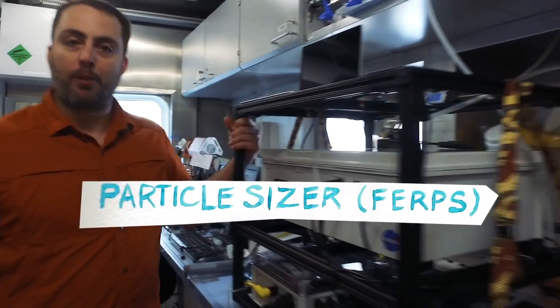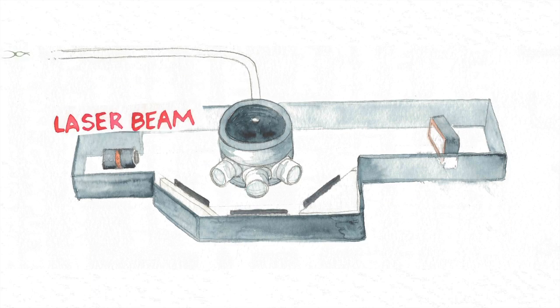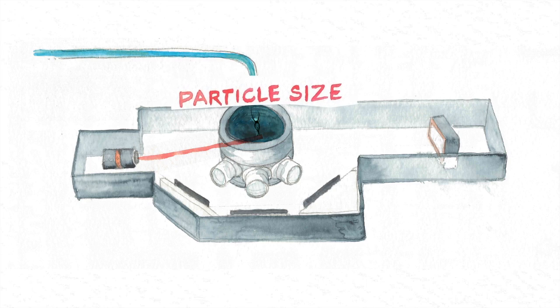Understanding whether particles near the surface of the ocean are big or small has implications in the carbon cycle, so I've brought a prototype instrument that measures particle size as we pump seawater through it. Inside the instrument, a laser beam passes through the seawater sample that we're pumping, and all the particles suspended in the beam scatter light in different directions. We're able to then measure that scattered light to tell us about the particle sizes in our sample.